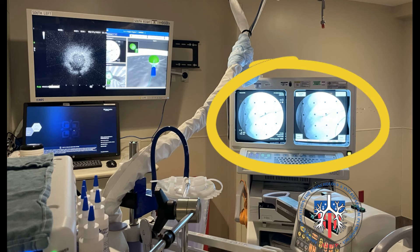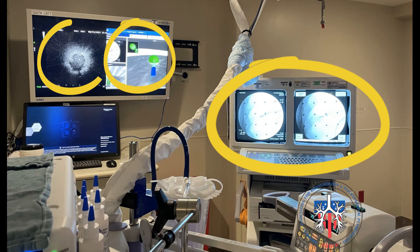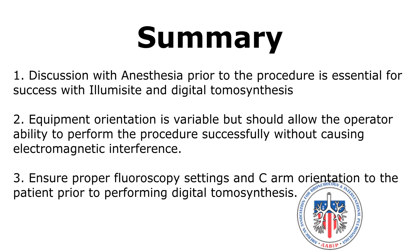This is one way to orient views during a procedure: here, the fluoroscopy image monitor is located, the navigation monitor, and the radial endobronchial ultrasound image. In summary, discussion with anesthesia prior to the procedure is essential for success with Alumasight and digital tomosynthesis. Equipment orientation is variable but should allow the operator to perform the procedure successfully without causing electromagnetic interference. Finally, ensure proper fluoroscopy settings and C-arm orientation to the patient prior to performing digital tomosynthesis.